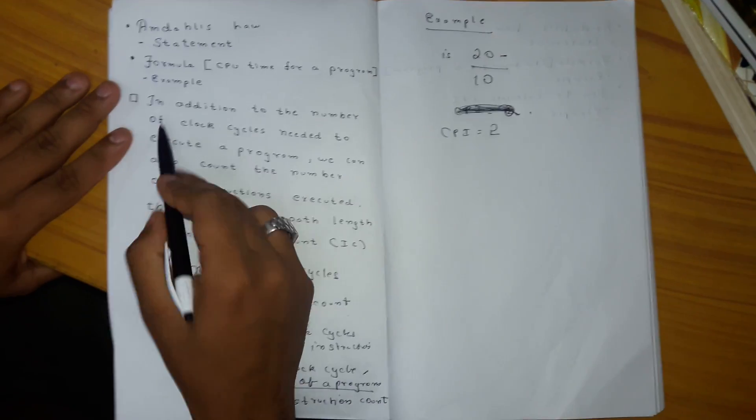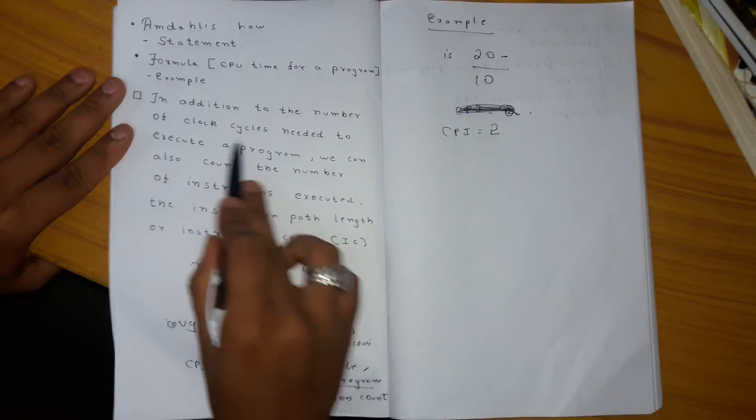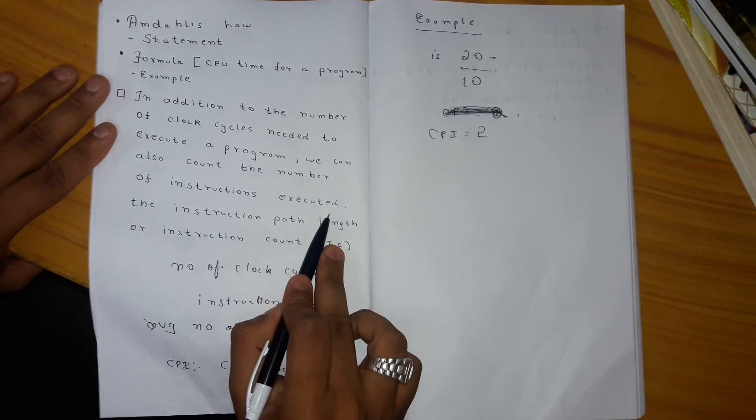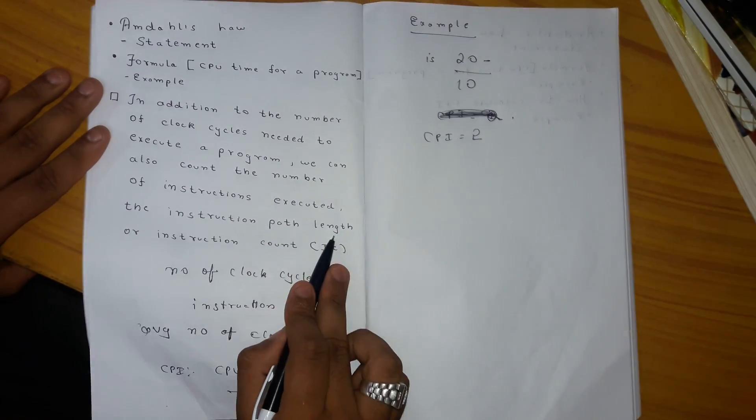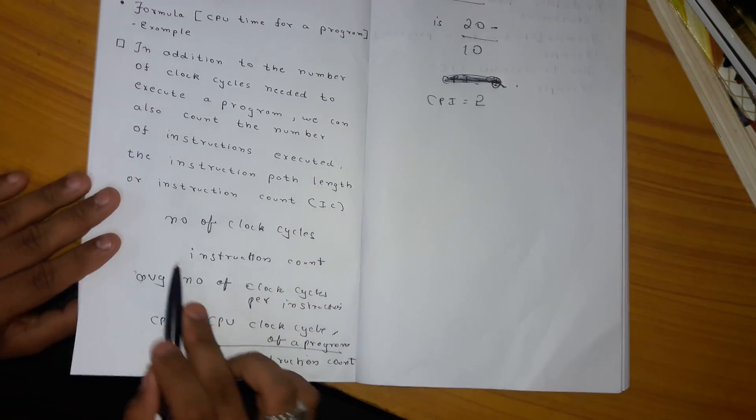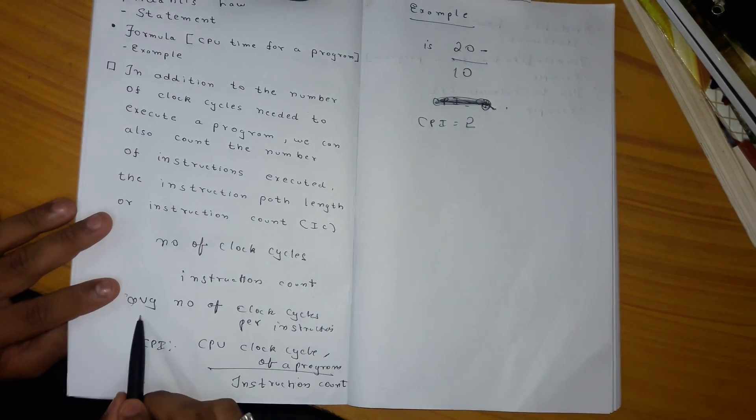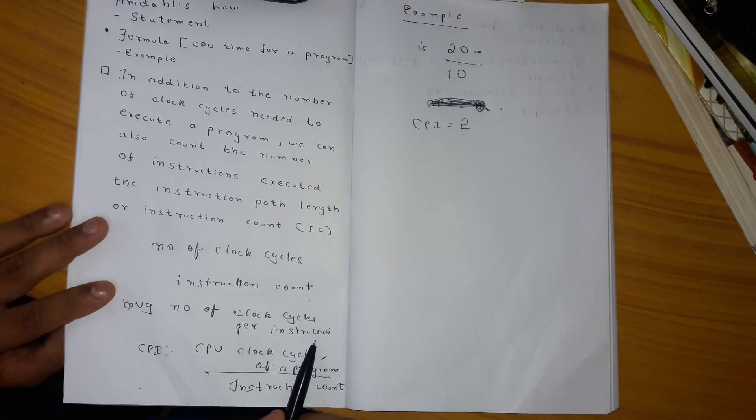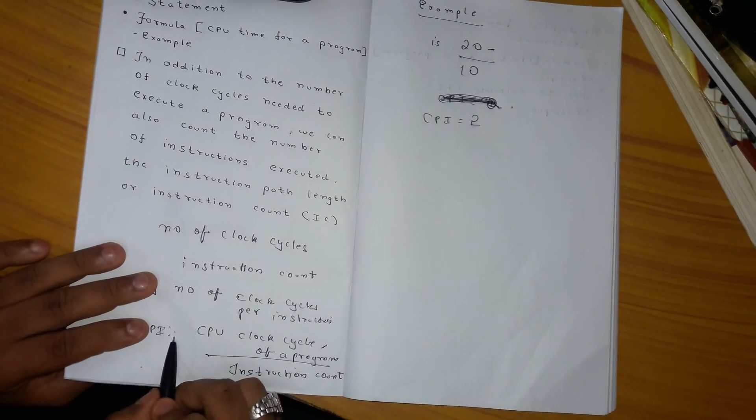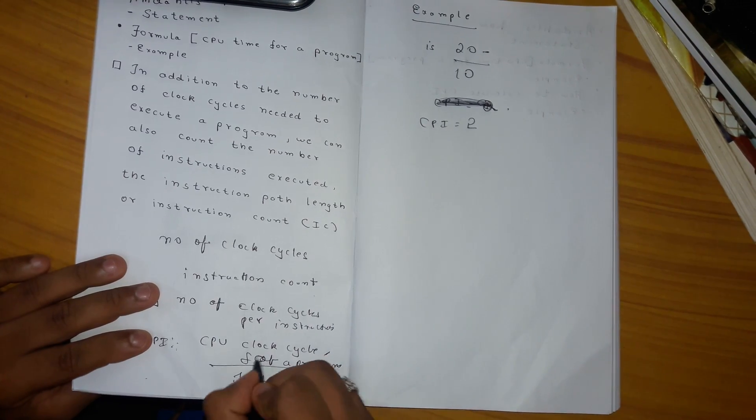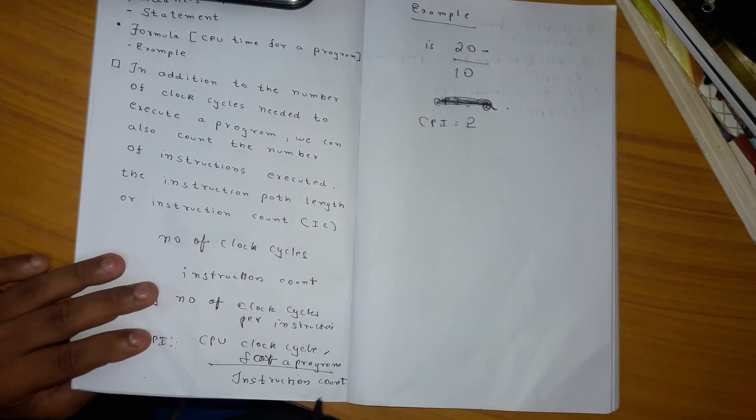Next, in addition to the number of clock cycles needed to execute a program, we can also count the number of instructions executed—the instruction path length or instruction count. CPI can be expressed as: CPI equals CPU clock cycles for a program divided by instruction count.